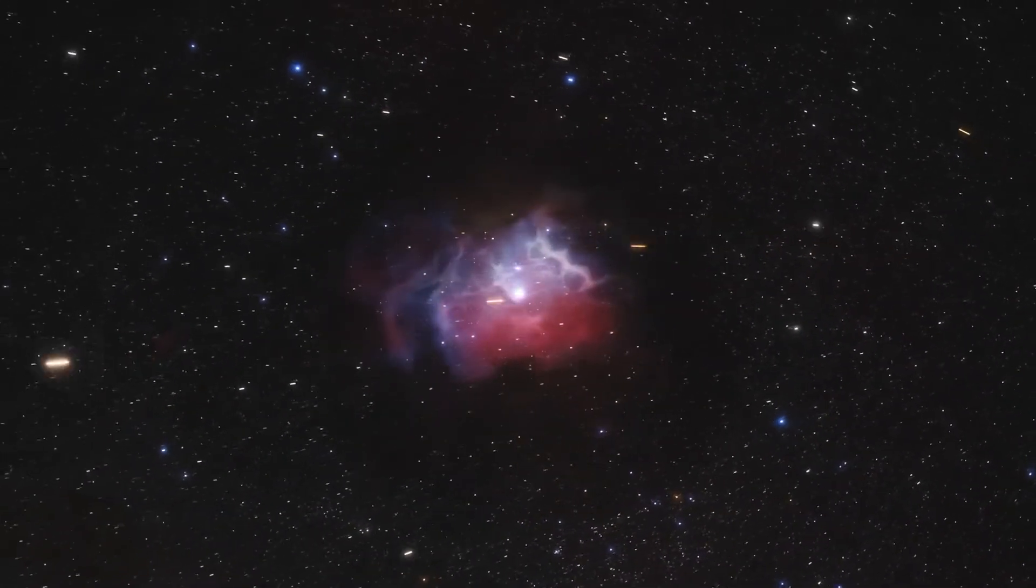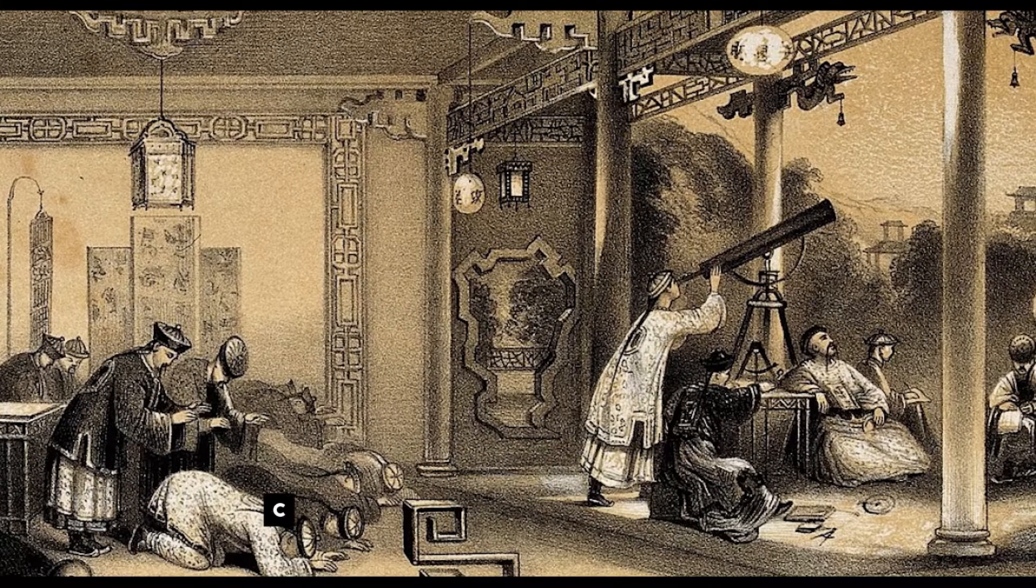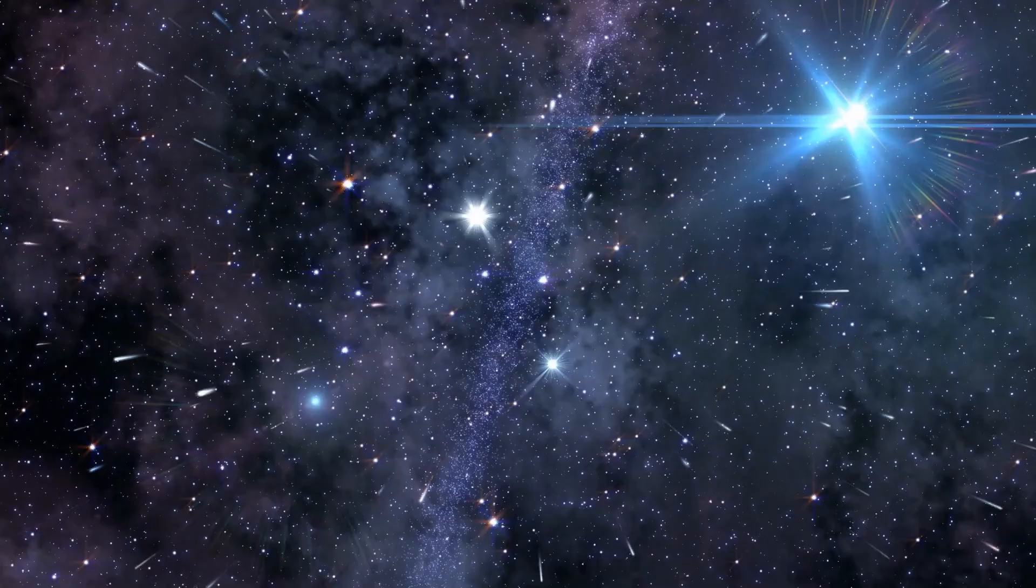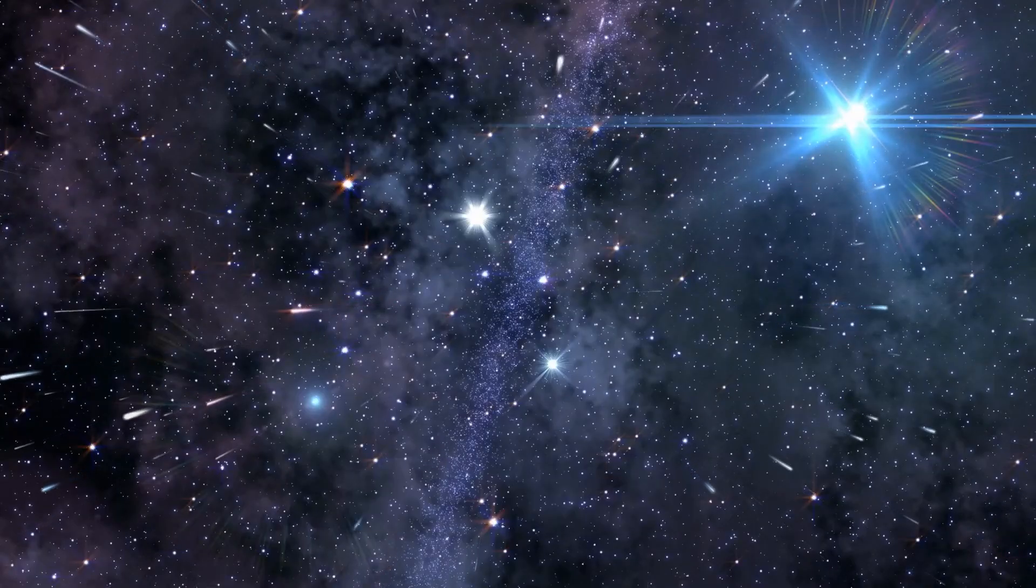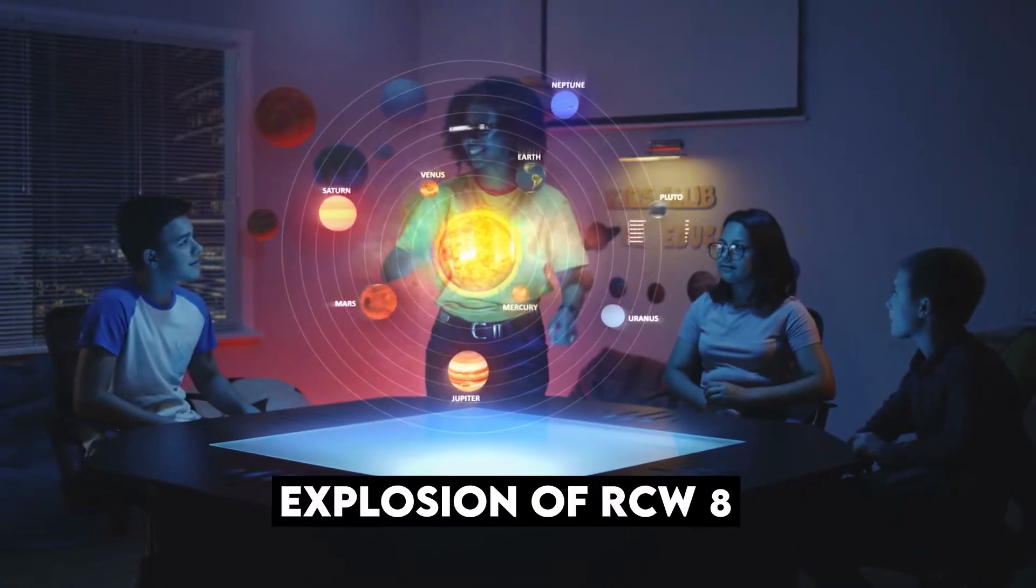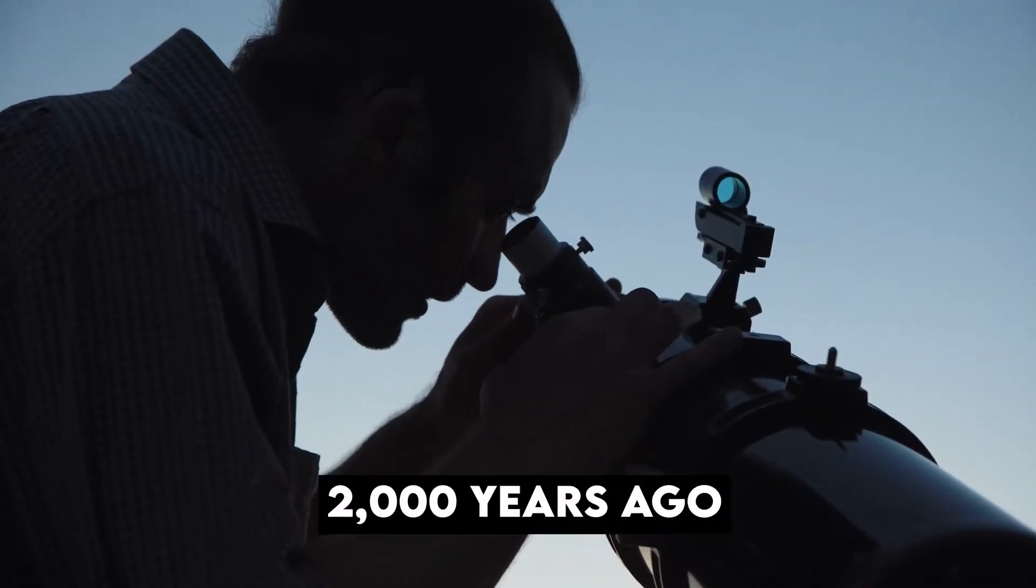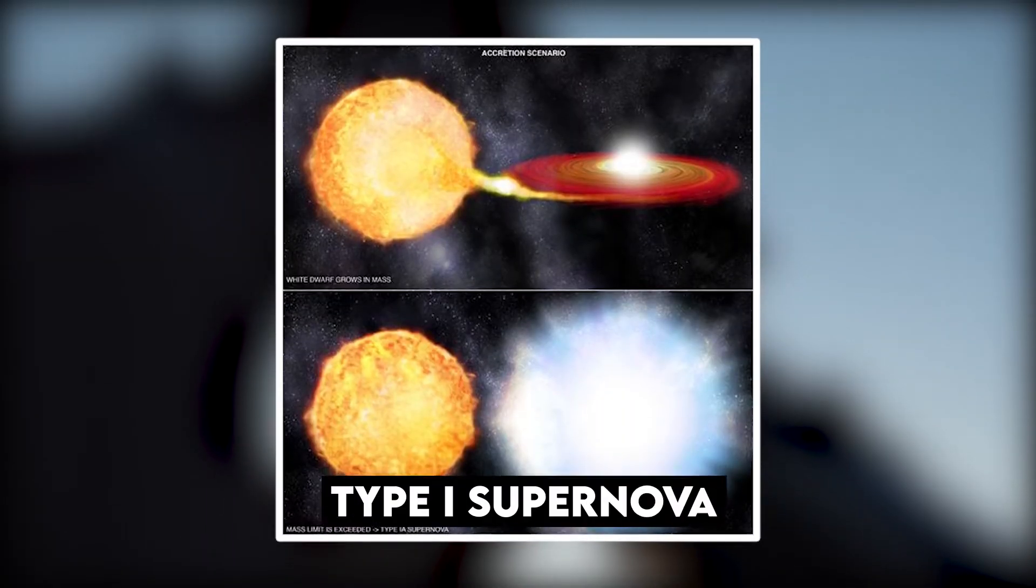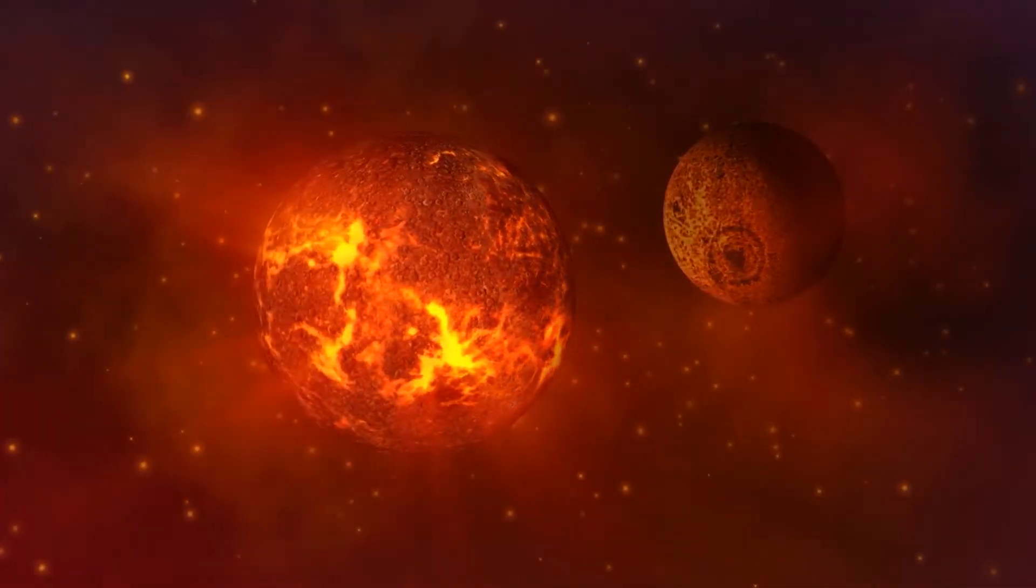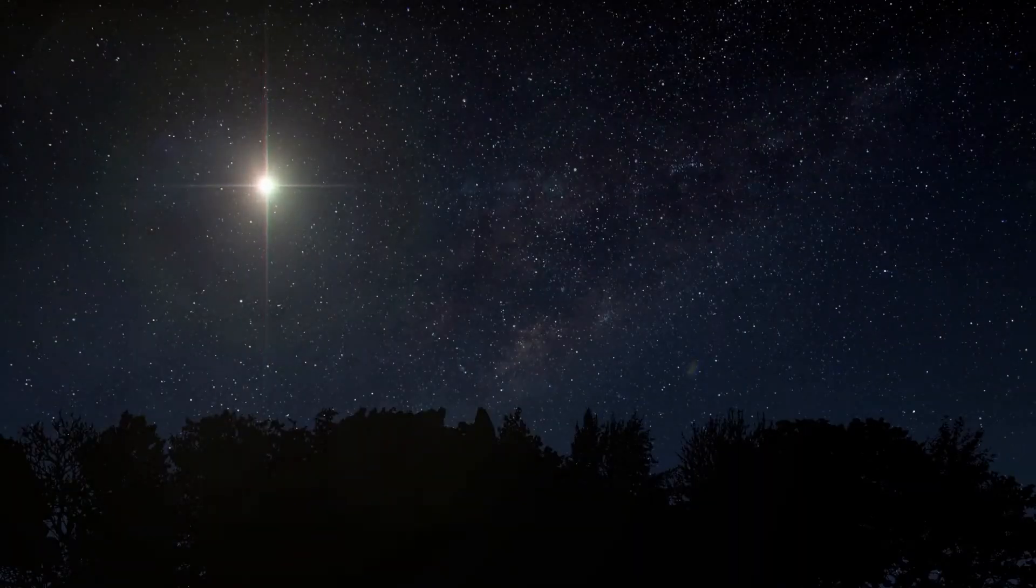The oldest documented supernova is RCW-86, which was seen by Chinese astronomers in AD 185. It was called the Guest Star and it remained in the sky for eight months. Recently, astronomers concluded that the explosion of RCW-86 happened around 2000 years ago and was caused by a Type I supernova, which is a stable white dwarf or dead star that was pushed past the edge of stability when a host star unloaded material onto it.